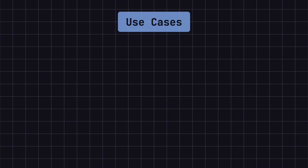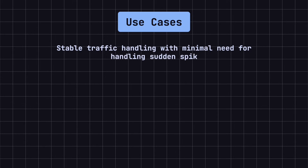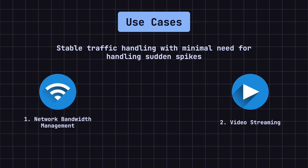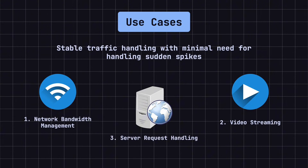The leaky bucket algorithm is well-suited for scenarios where stable request handling is needed. It is often used in network bandwidth management to limit data transfer rates, in video streaming to ensure smooth data transmission, and in certain server request handling to maintain a steady processing rate and prevent overload.